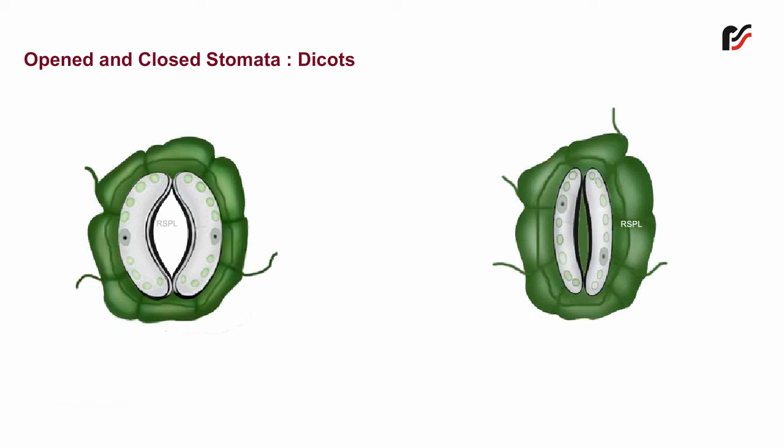When the stomata are to open, guard cells take up water by osmosis from the neighbouring epidermal cells and swell up due to high turgor pressure.